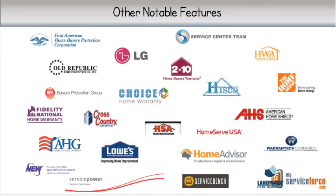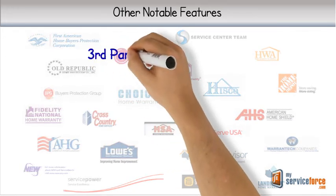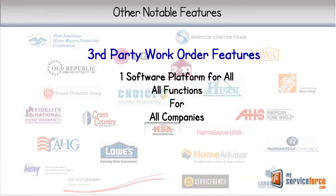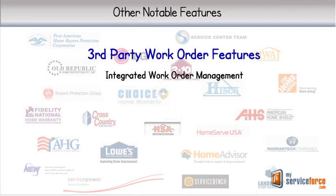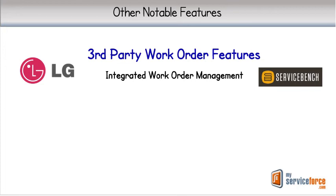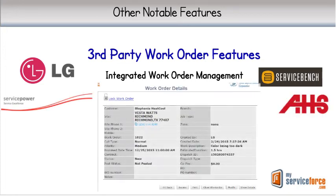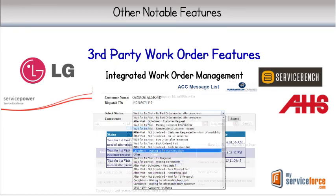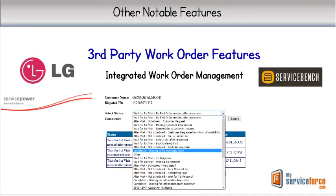Since many service companies do at least a small amount of work with third-party providers of work orders, let's finish with a brief overview of the most useful features for them. The first and most important is Ubiquity — one software platform that can perform almost all of the functions for these companies. We support over 20 providers, and it's always growing. For the leading suppliers, we provide an integrated work order management feature. Included in this group is LG Electronics, Service Bench, Service Power, and American Home Shield. For these, we can create the work orders, capture all associated emails in a separate electronic filing cabinet for each, send status updates automatically as the work order is completed customized to their requirements, and more, including scheduling and payment processing for LG.